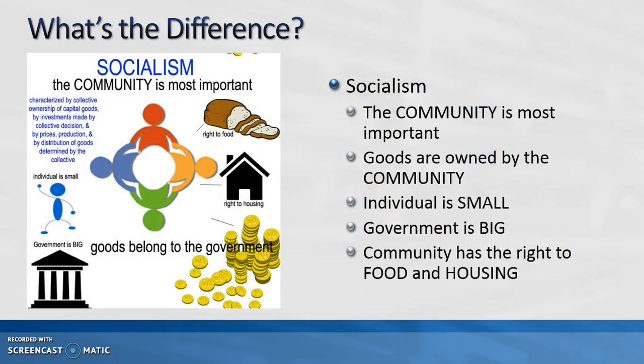In a socialist system, the community is most important. Goods are owned by the community, the individual role is small, and the government is large with significant influence over business. The community has the right to food and housing, and the government has the obligation to provide that.